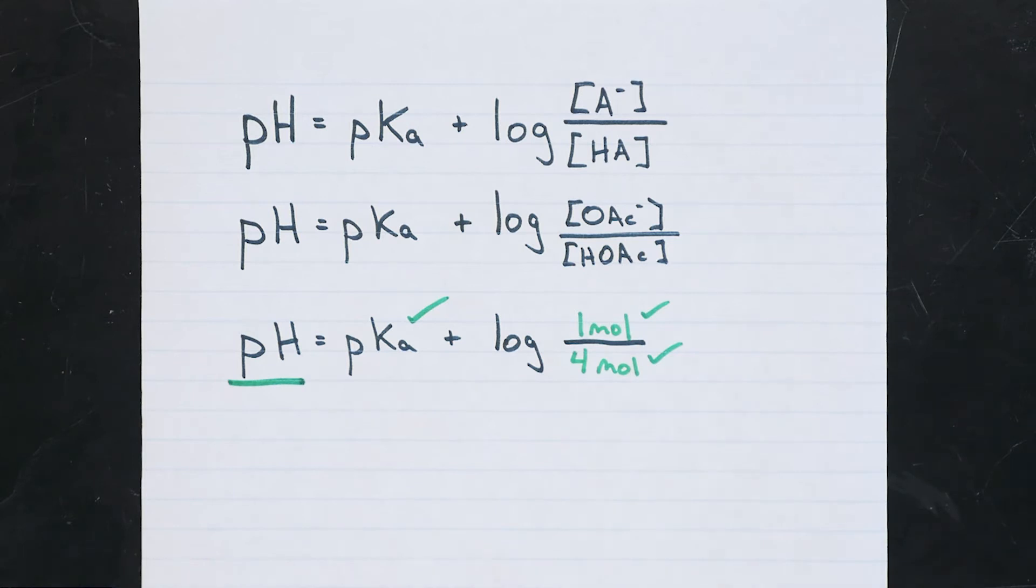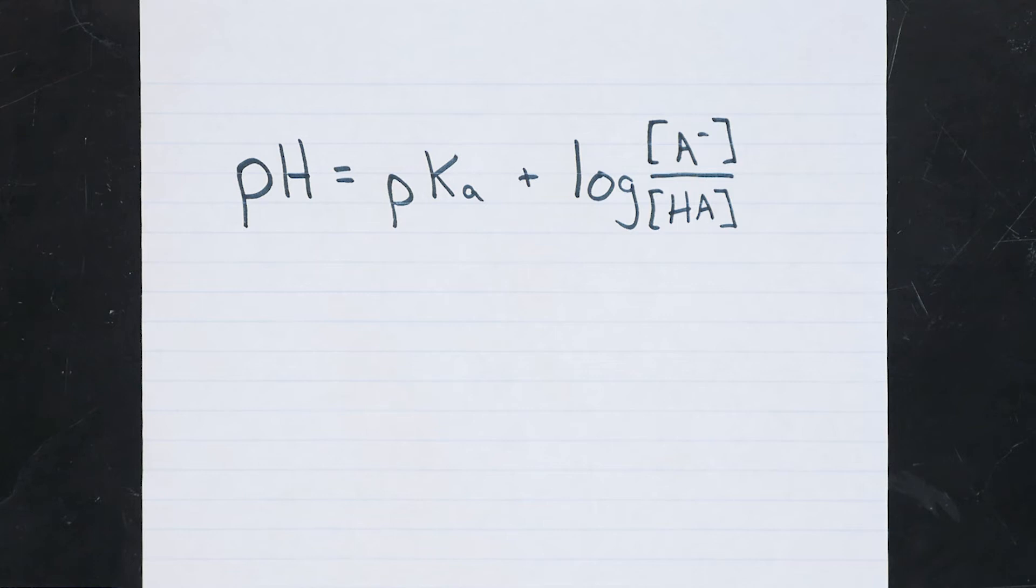Since in all cases today, the acid and base will be in the same total volume of solution, we can either use concentrations or moles in the Henderson-Hasselbalch equation. Finally, you can use all of this to actually tailor make a buffer to a pH of your choosing. The Henderson-Hasselbalch equation can be reverse-engineered, so to speak, to produce a specific pH. In this case, you'll just need to set the pH to whatever you want it to be, and then solve for the number of moles of the conjugate that you need. Knowing that, you can use the formula weight of the conjugate to determine the mass of the conjugate needed.